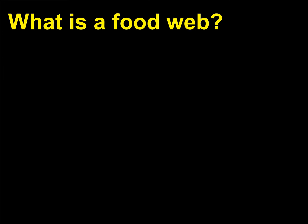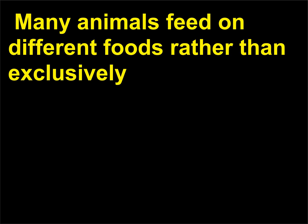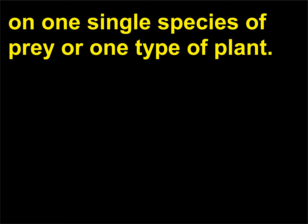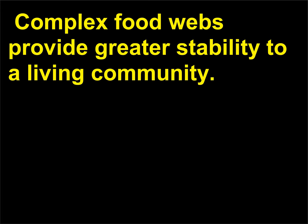What is a food web? A food web consists of interconnecting food chains. Many animals feed on different foods rather than exclusively on one single species of prey or one type of plant. Animals that use a variety of food sources have a greater chance of survival than those with a single food source. Complex food webs provide greater stability to a living community.